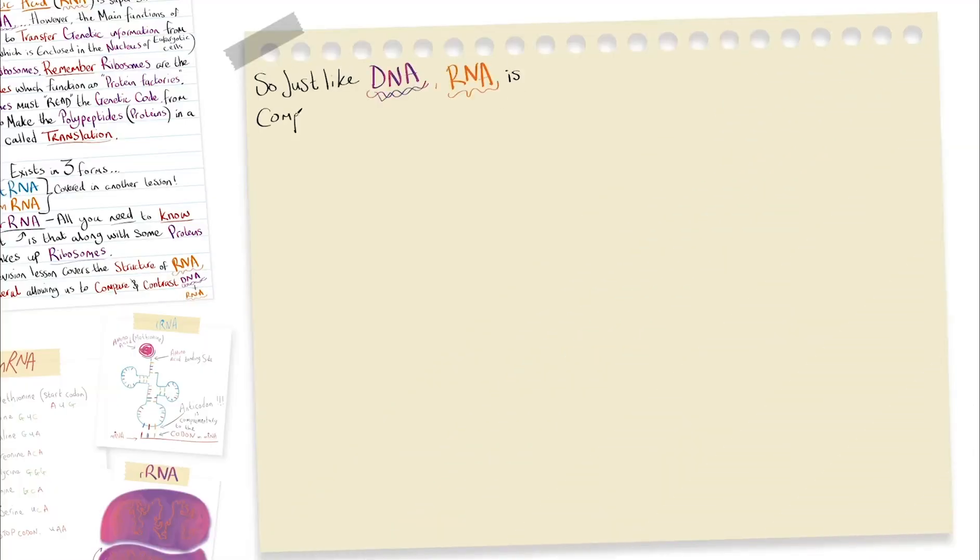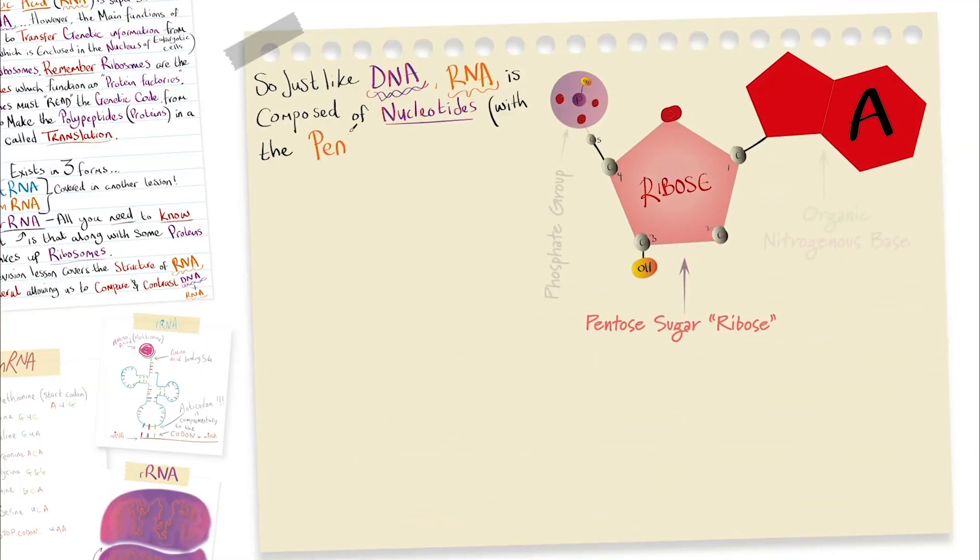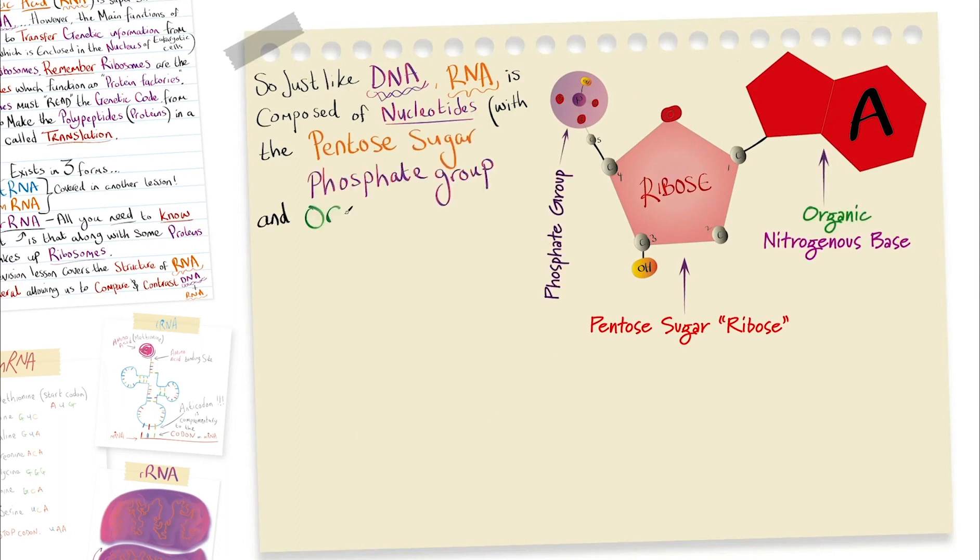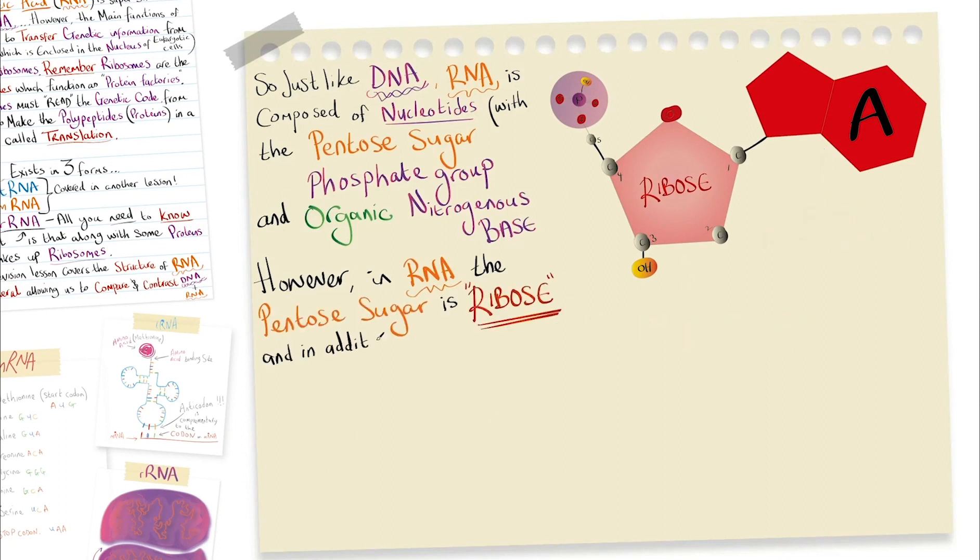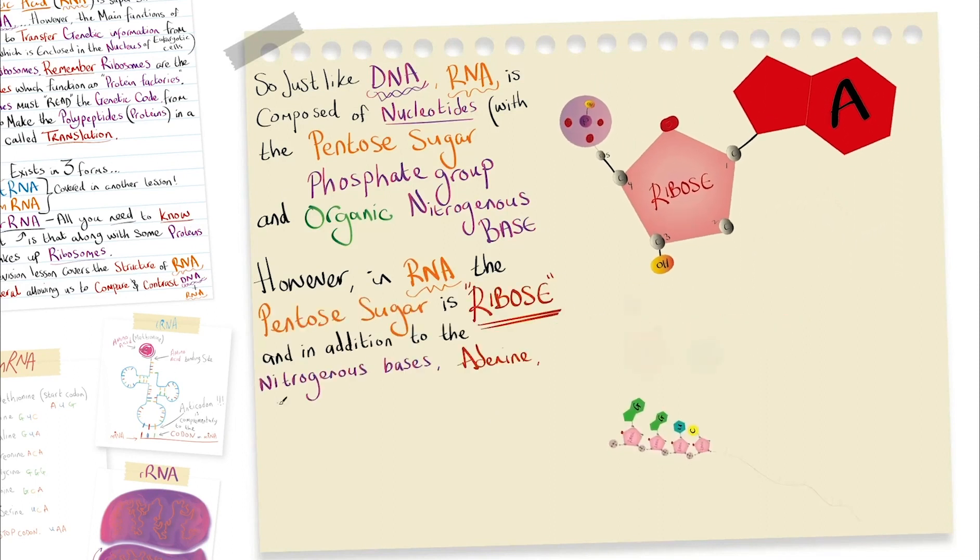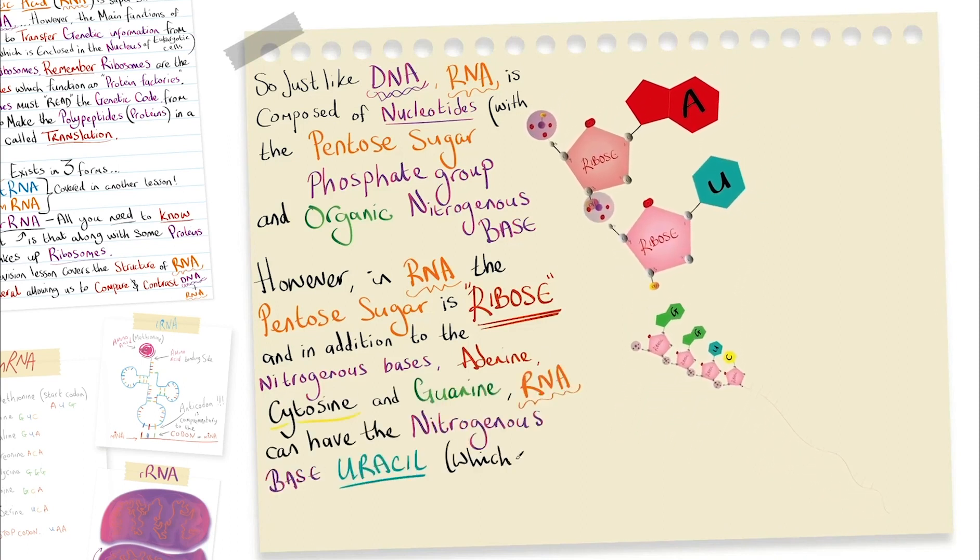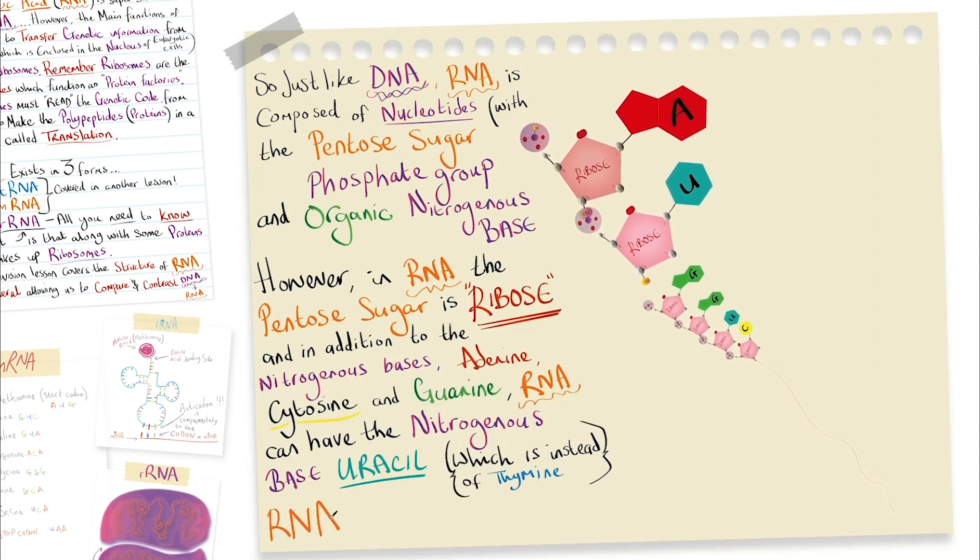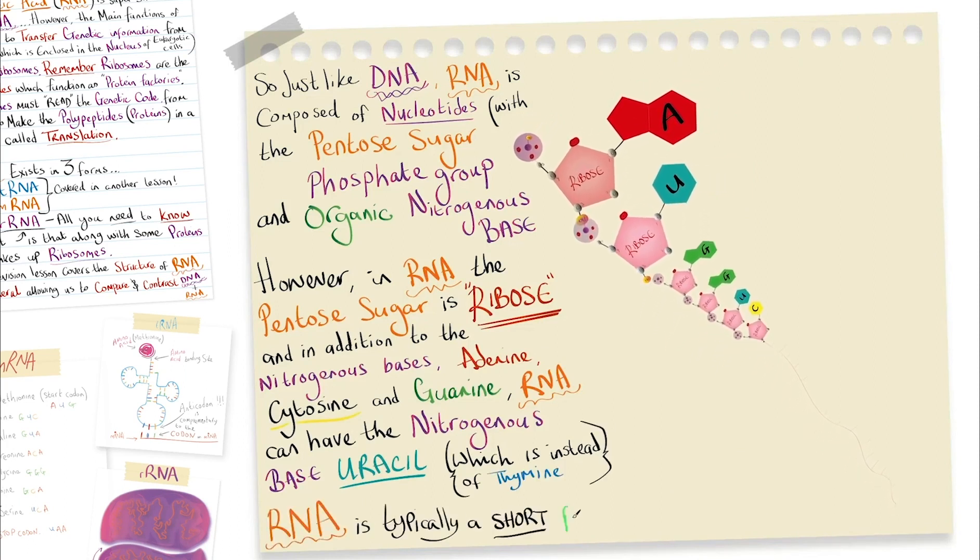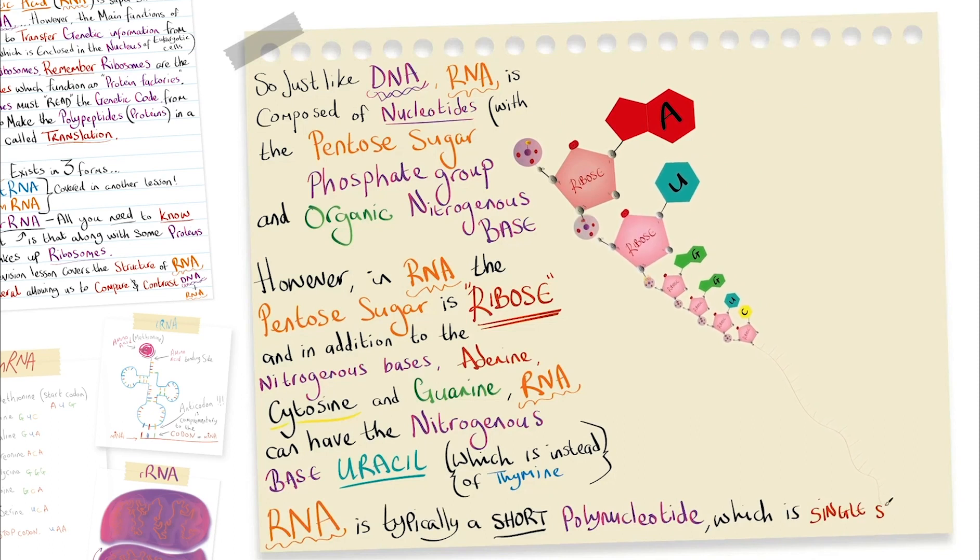Just like DNA, RNA is composed of nucleotides with the pentose sugar, phosphate group and organic nitrogenous base. However, in RNA, the pentose sugar is ribose. And in addition to the nitrogenous bases adenine, cytosine and guanine, RNA can have the nitrogenous base uracil, which is in place of thiamine. RNA is typically a short polynucleotide, which is single-stranded.